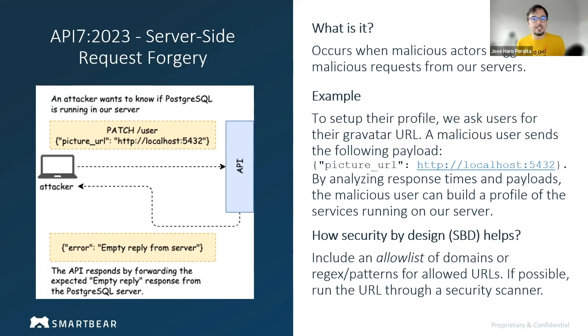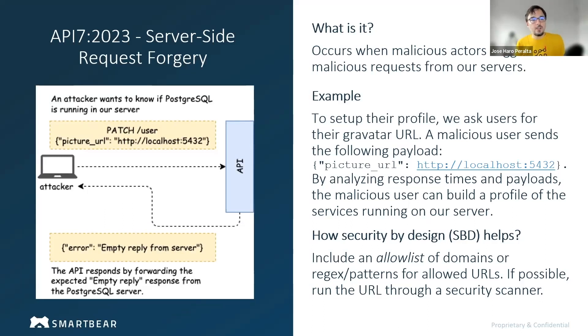Then they try to get access to that. The point is that they can leverage this information to build a profile of our services and plan a launch attack against our API. So what do you think we can do here?